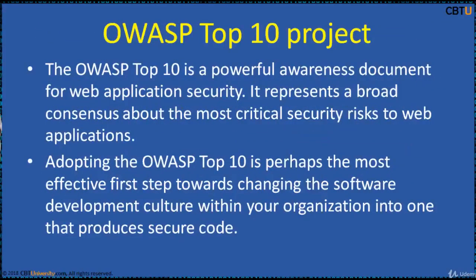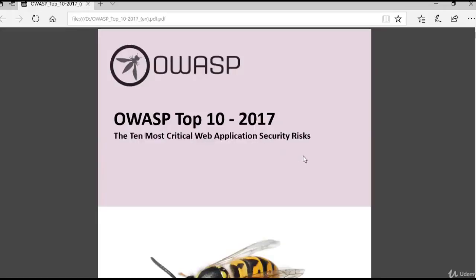OWASP Top 10 is a powerful awareness document for web application security. It represents a broad consensus about the most critical security risks to web applications. Adapting the OWASP Top 10 is perhaps the most effective first step towards changing the software development culture within your organization into one that produces secure code. This is the OWASP Top 10 2017 document, which contains the 10 most critical web application security risks explained.